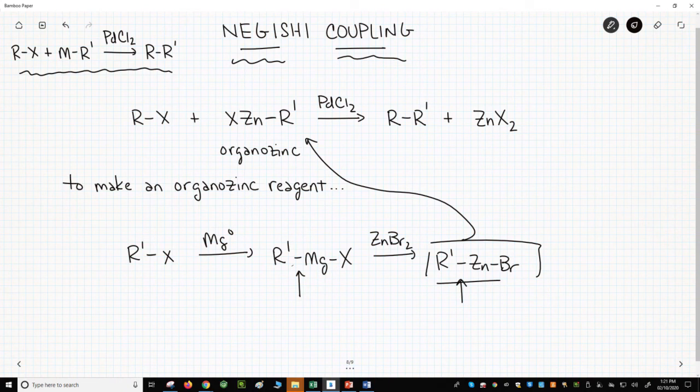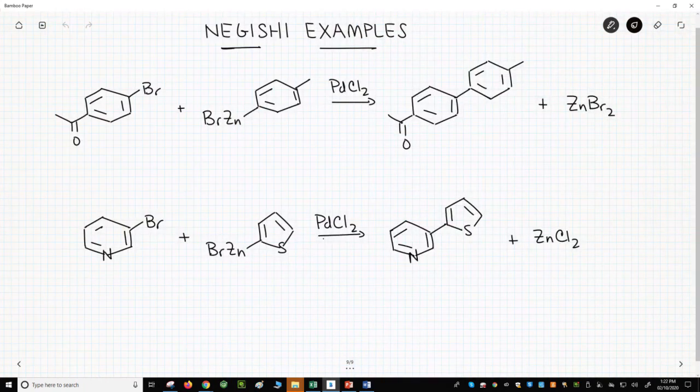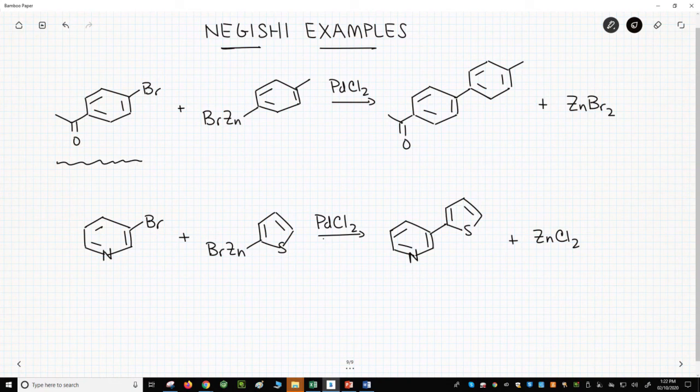Let's see two specific examples. On the top line is a Negishi coupling. On the far left is the aryl halide. Next is the organozinc. The biaryl product is on the right, and we form some zinc bromide as a salt.